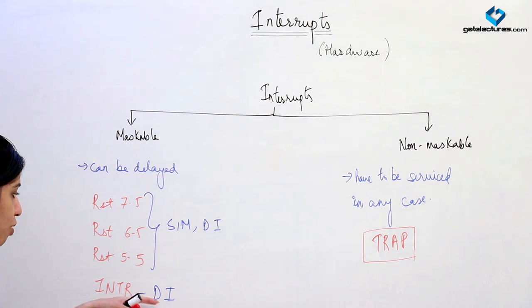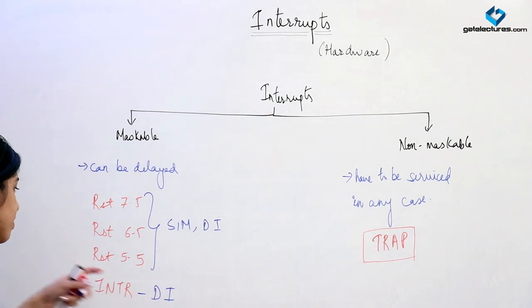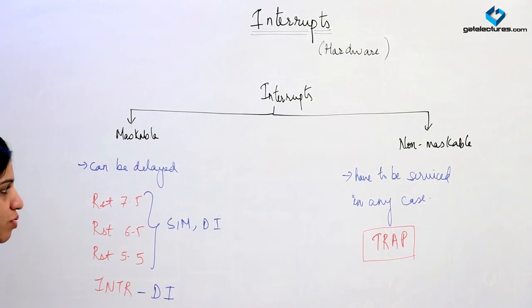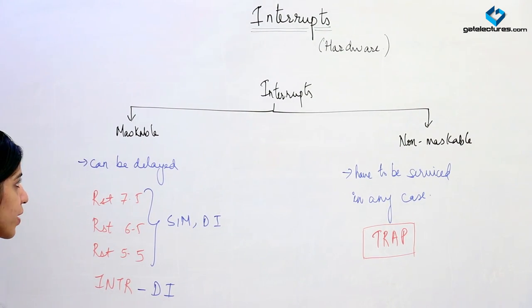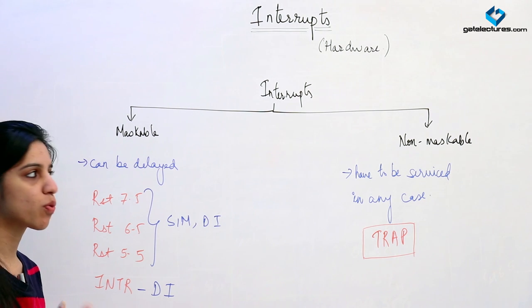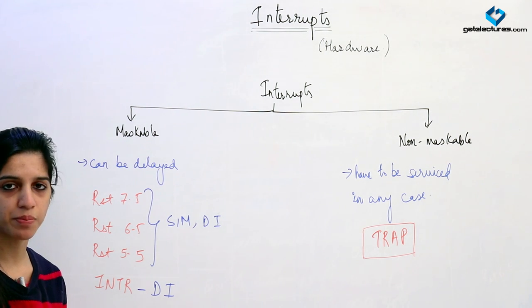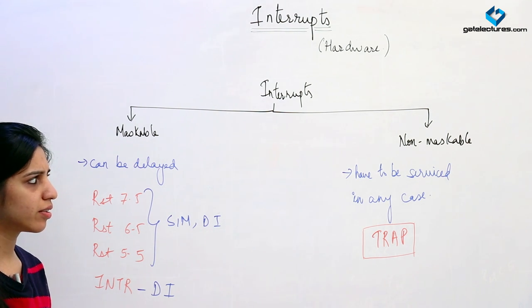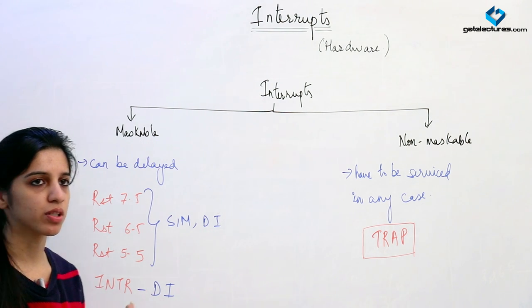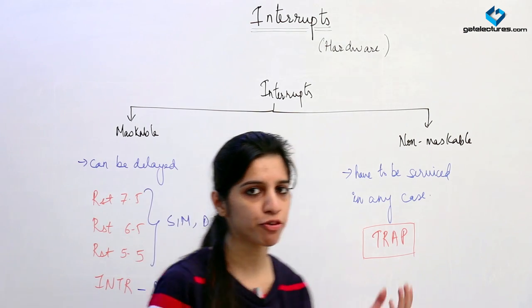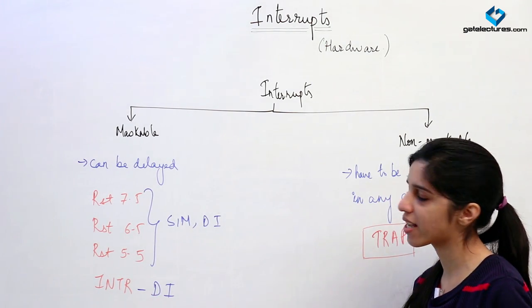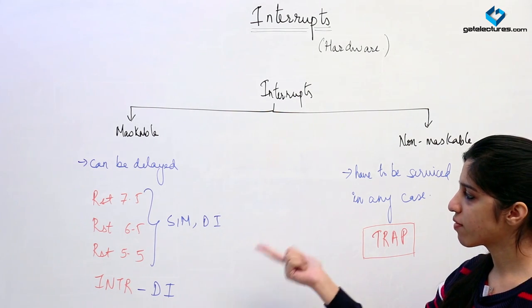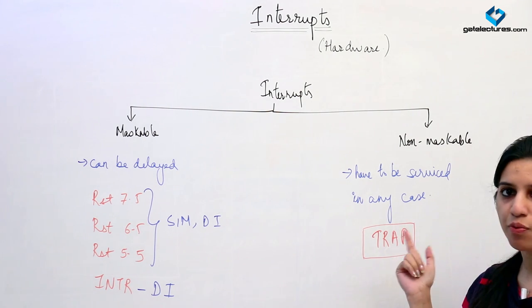We are going to see how using these instructions we can mask the interrupts. We have learned two classifications of interrupts. One is vectored and non-vectored. Vectored interrupts have fixed addresses — they go to a fixed memory location. Internally, a call function is executed which takes the microprocessor to that fixed memory location and the ISR is executed. RST 7.5, 6.5, 5.5, and trap are vectored interrupts — their address is known.